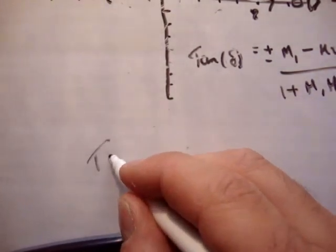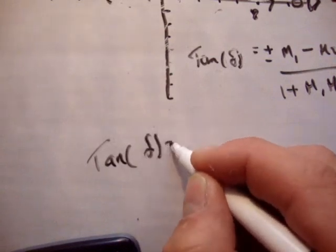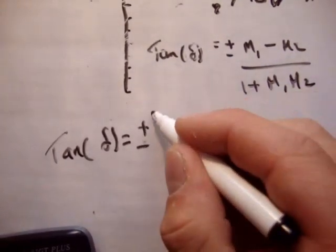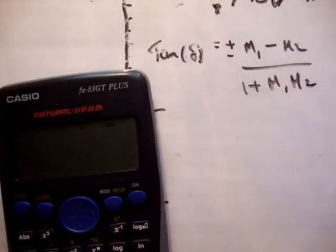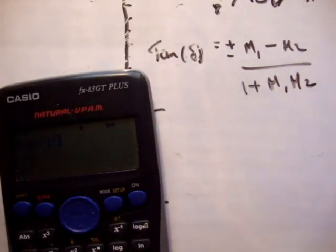So say tan delta is equal to what? Is equal to plus or minus, and just ignore everything else. M1, so the slope of, just pick one, it doesn't matter which one you pick first, so 150.